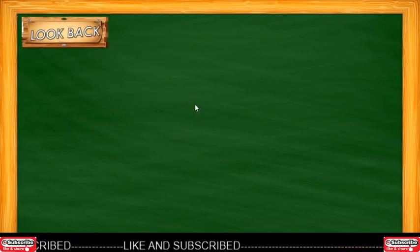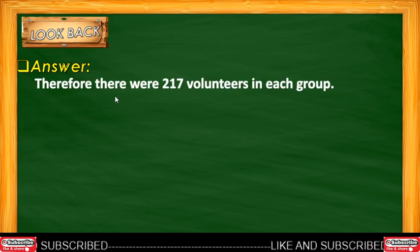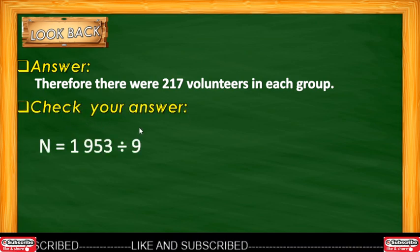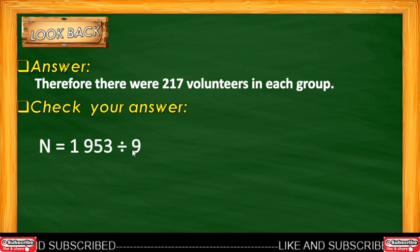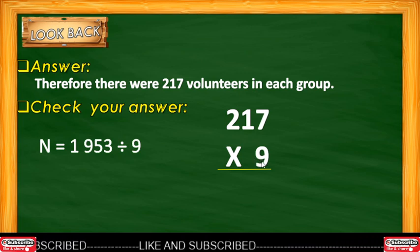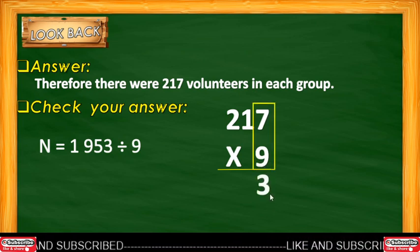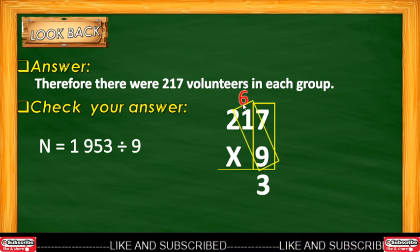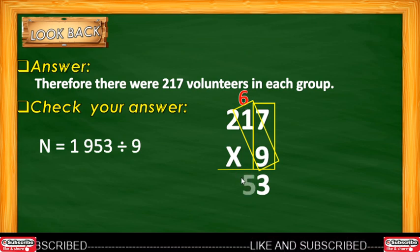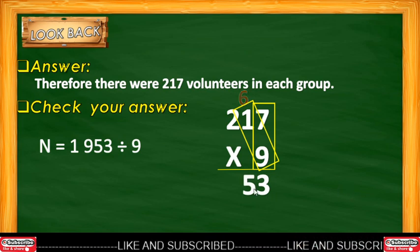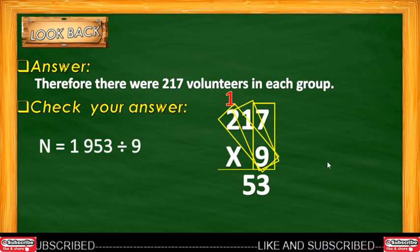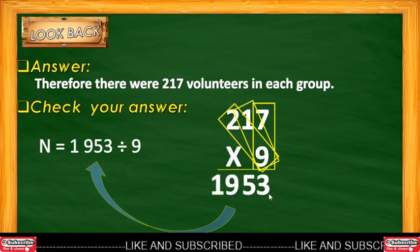Let's interpret and write our answer. Look Back — Therefore, there were 217 volunteers in each group. To check: 217 × 9 = ? 9 × 7 = 63, carry 6; 9 × 1 = 9, plus 6 = 15, carry 1; 9 × 2 = 18, plus 1 = 19. The result matches 1,953, so our answer is correct.